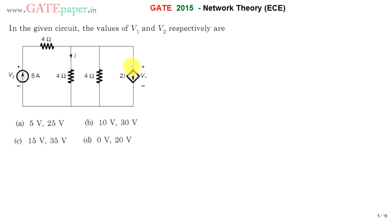Since voltage across this dependent current source is V1, we can write this node voltage is V1 and all are going to be at same voltage. Now apply KCL at V1 and current coming from this branch is 5 amperes.